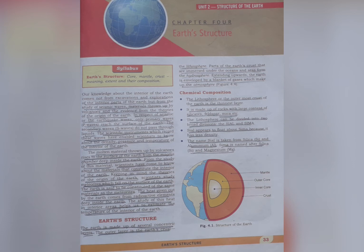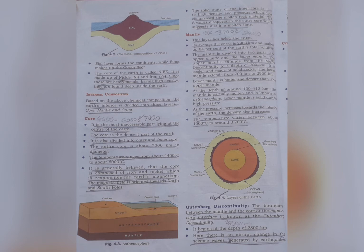Chemical Composition — The Lithosphere. The lithosphere, or the outermost crust of the Earth, is the thinnest layer. It is made up of rocks with a large content of silicates, feldspar, etc. The lithosphere can be divided into two broad divisions: Sial and Sema. Sial appears to float above Sema because it has less density. Sial is named after silica and aluminium; Sema is named after silica and magnesium. Sial forms the continents while Sema makes up the ocean floor. The core of the Earth is called Nife — it is made up of nickel and iron. Since these are heavy metals with high density, they are found deep inside the Earth.